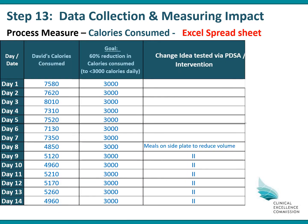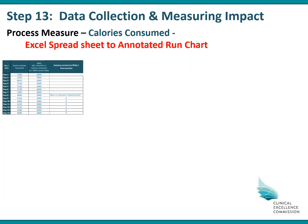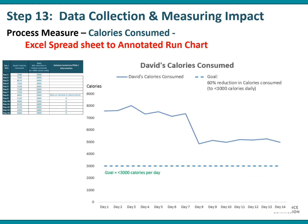The Excel spreadsheet could have the first column as the day or date, the second column as the actual calories David consumed, the third column as the goal of less than 3,000 calories a day, and the fourth column as the actual change idea tested via a PDSA. On day eight he started to serve his meals on a small side plate to reduce the volume of food eaten. From the spreadsheet you can produce an annotated run chart, showing the goal of 3,000 calories and the day-by-day calories consumed. The annotation shows where he started serving meals on a small plate, and you can see that intervention reduced his calories.